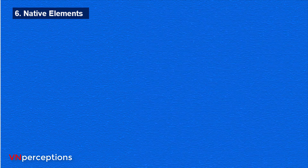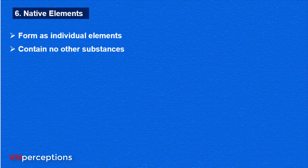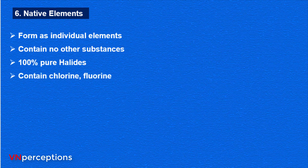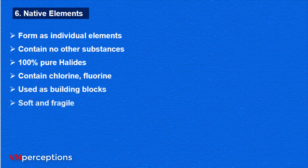Talking about native elements — they form as individual elements, meaning they contain no other substances; they are 100% pure. Halides contain chlorine and fluorine, and these are used as building blocks. They are soft as well as fragile — meaning they can break easily — and they are also soluble in water.